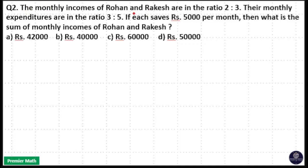The monthly incomes of Rohan and Rakesh are in the ratio 2:3. Their monthly expenditures are in the ratio 3:5. If each saves Rs. 5000 per month, then what is the sum of monthly incomes of Rohan and Rakesh?